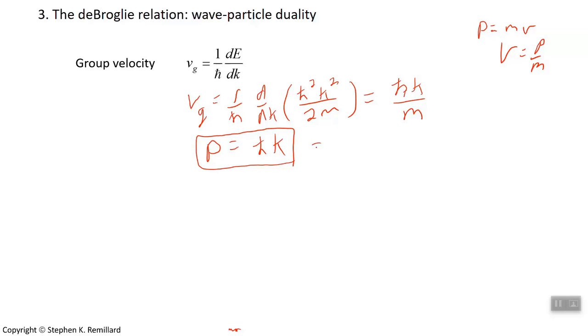Let's just continue the exercise. Replace ℏ with H over 2π. Replace k with 2π over λ. And we can also say momentum is H over λ, another keeper. You want to write those things down in your notes and keep them.